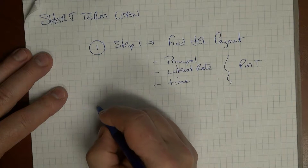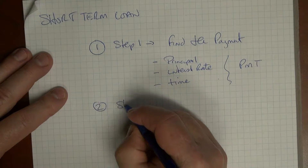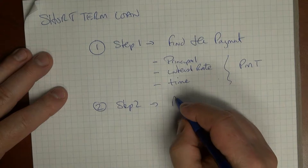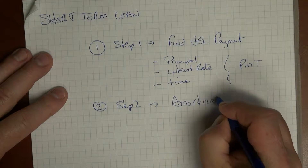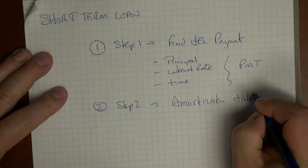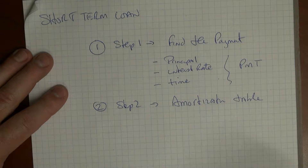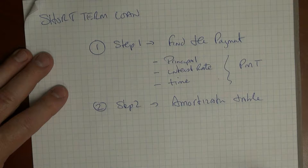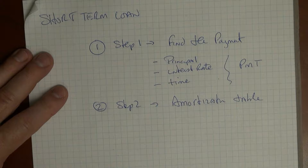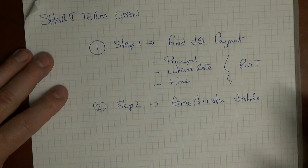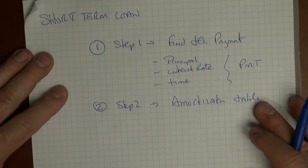Once we get that done, we go to step two: create what's called an amortization table. The amortization table shows how much we pay on the loan, how much of that payment goes towards principal, how much goes towards interest, and finally what the ending balance of the loan is at the end of the given period. It does that for each and every single payment period of the loan.